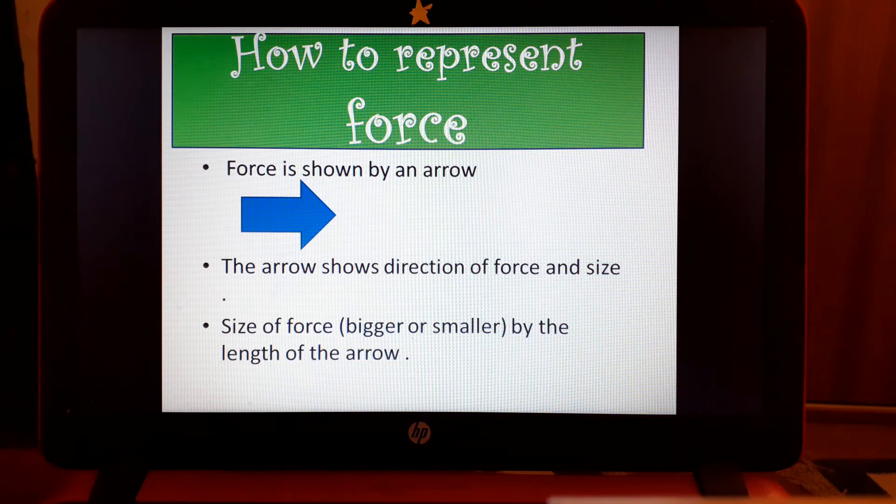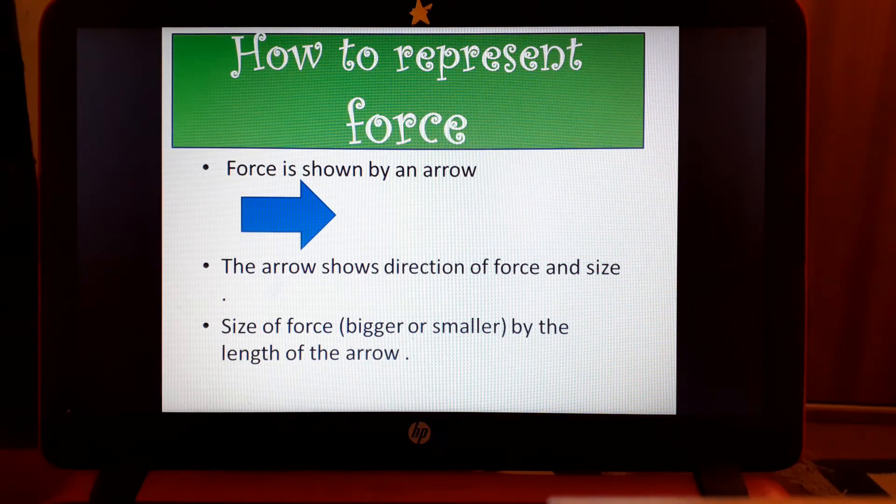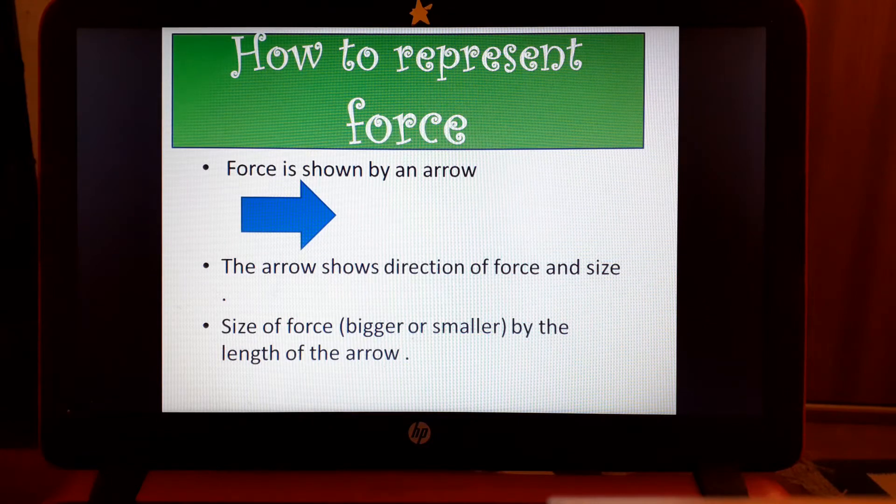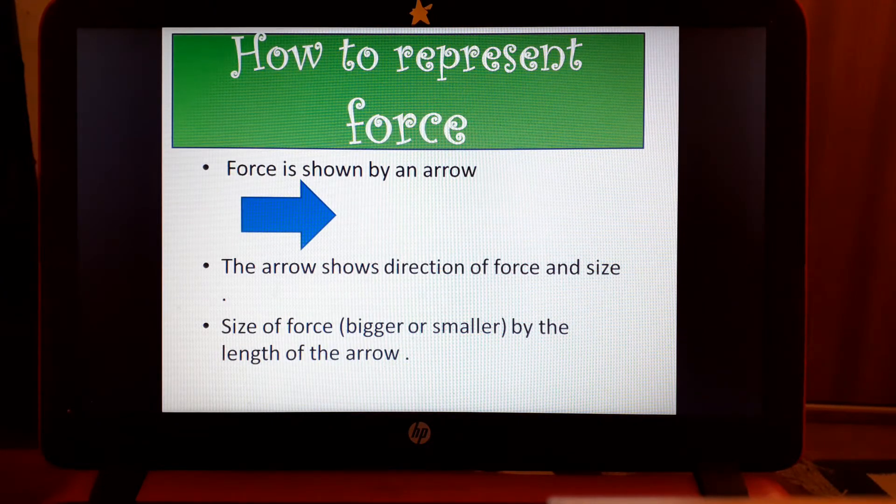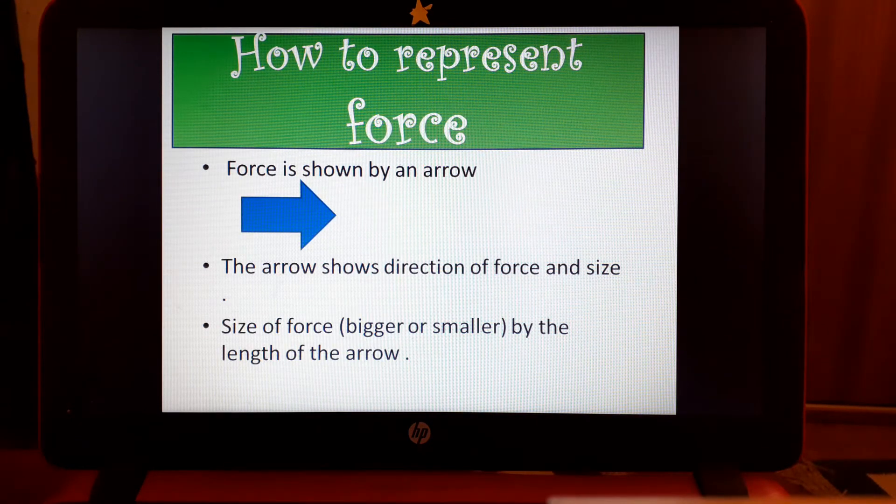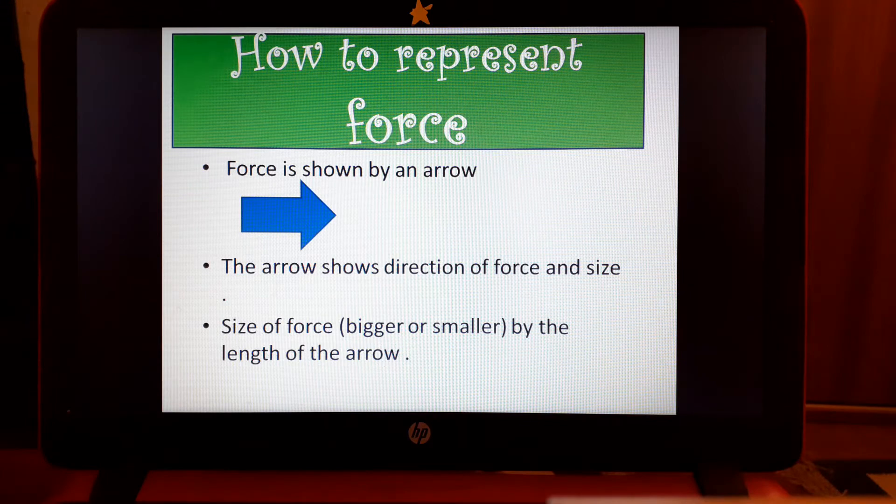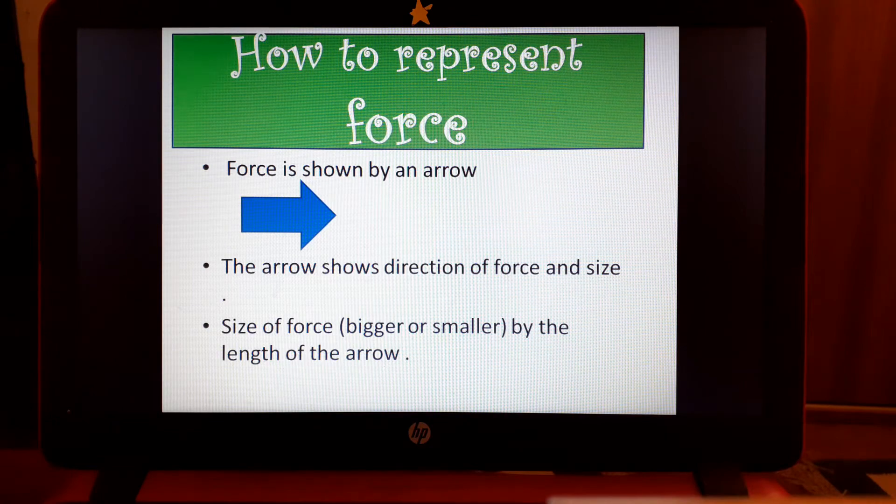The arrow has two functions: first it shows you the direction—left, right, up or down, or whatever direction the force is. It also shows you the size. The size is shown by the length of an arrow. If the arrow is longer, that indicates the force is bigger. If the arrow is shorter, that means the force is less or smaller.